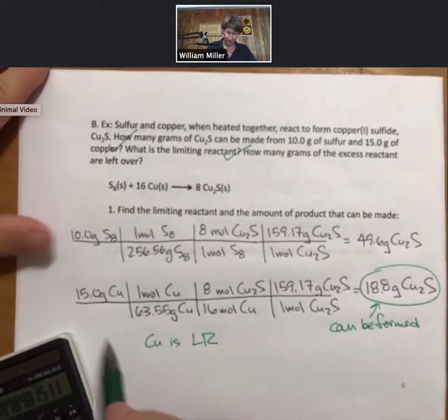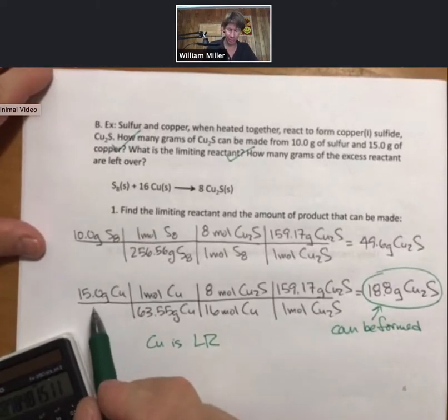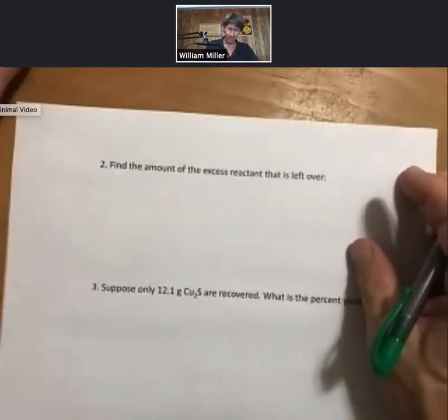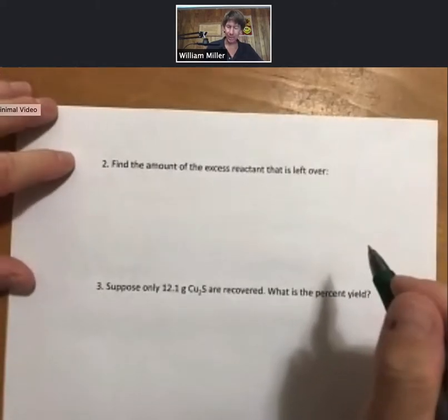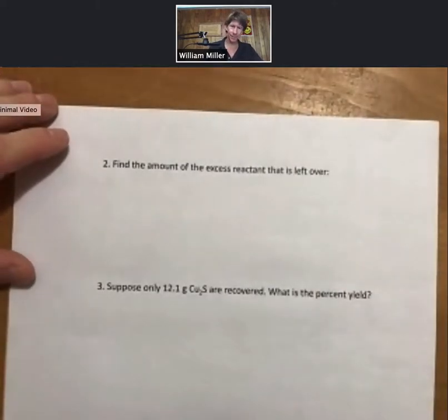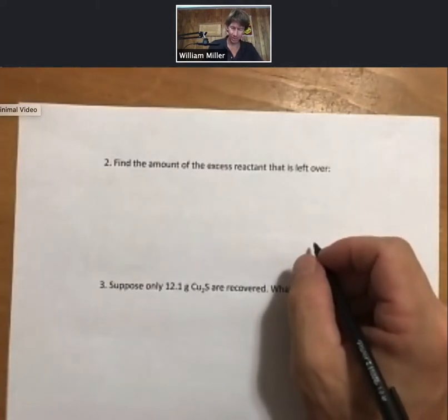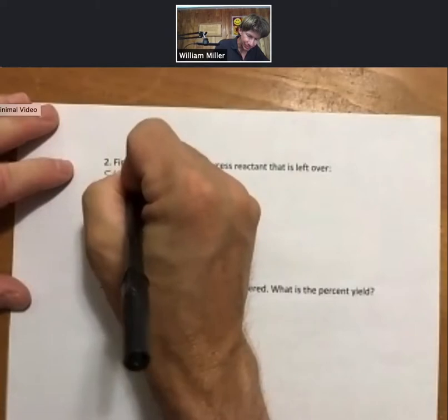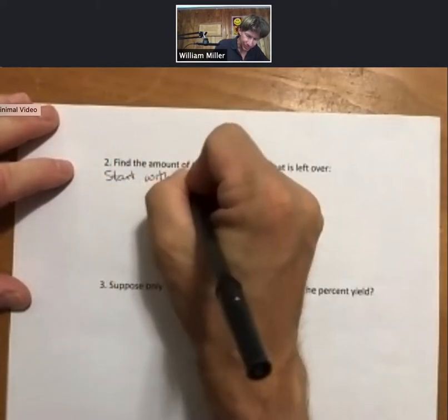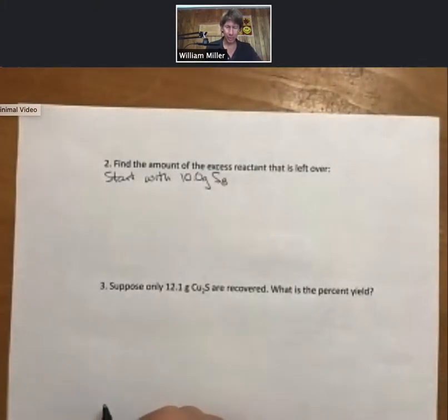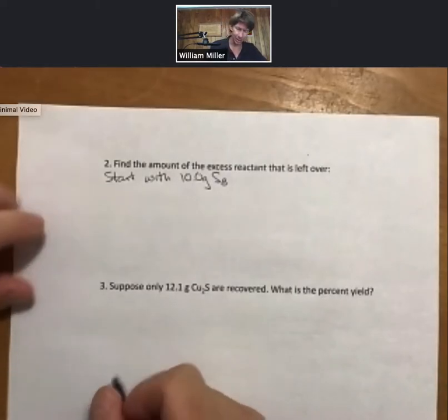Let's see. We can use this 15.0 grams in our stoichiometry on the following page. Find the amount of excess reactant that is left over. That's going to say start with 10.0 grams of sulfur. Then do stoichiometry with the copper to find how much of the sulfur is taken away.